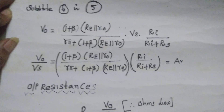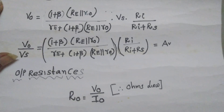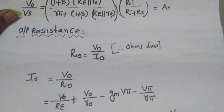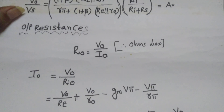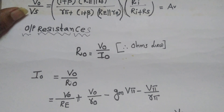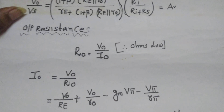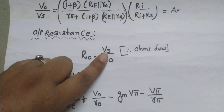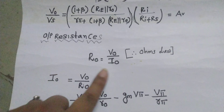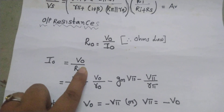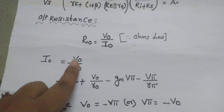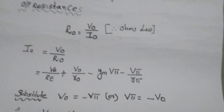Next, we find the output resistance R-naught. R-naught = V-naught / I-naught (by Ohm's law). If we simply substitute V-naught = I-naught·R-naught, the I-naught terms cancel and we get R-naught = R-naught, which is circular. So instead, we find I-naught directly from the circuit, then substitute to get R-naught.